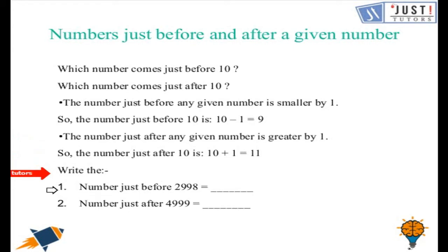So the first question is number just before 2998. So the number just before, to find the number just before we have to subtract 1. So the answer would be 2997.